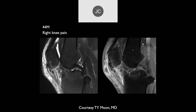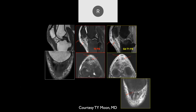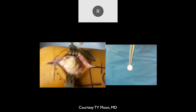A 44-year-old with right knee pain shows extensive prepatellar edema, a thickened and edematous patellar tendon, and two foci of low signal intensity — these are tophi. There is some edema at the inferior pole. At surgery, two small tophi were pulled from the tendon. This is tophaceous gout.